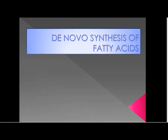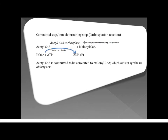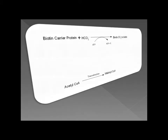The de novo synthesis of fatty acids involves making fatty acids from scratch. The liver synthesizes triglycerols from fatty acids when glucose levels are high and the amount of acetyl-CoA produced exceeds the amount needed by the cell. Acetyl-CoA makes fatty acids. Fatty acid synthesis occurs in the liver and lactating mammary glands. You need acetyl-CoA, ATP, and NADPH. The committed step is the carboxylation reaction — acetyl-CoA is committed to be converted to malonyl-CoA, which then aids in synthesis of fatty acids. Acetyl-CoA carboxylase is an ABC enzyme that needs ATP, biotin, and CO2. It is the regulatory enzyme for fatty acid synthesis and has two active sites: biotin carboxylase and transcarboxylase.